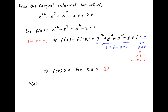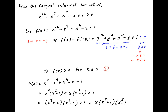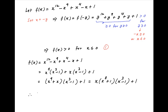Now again, f(x) equals x raised to the power 12 minus x raised to the power 9 plus x raised to the power 4 minus x plus 1. This is equal to x raised to the power 9 times (x cubed minus 1) plus x times (x cubed minus 1) plus 1, which can also be written as x times (x raised to the power 8 plus 1) times (x cubed minus 1) plus 1.